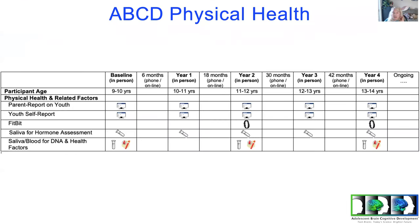Let me transition to physical health. Originally mental and physical health were one group but we split off because the assessments became more detailed. This gives a big picture overview of physical health and related factors. Like mental health, we have parent reports about the youth, youth self-report, objective physical measurements, Fitbits for actigraphy and sleep information at year two and year four, and various biologics.